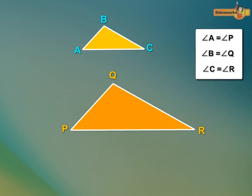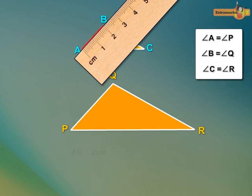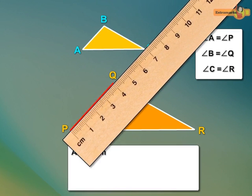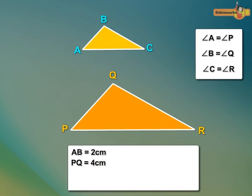Now, let us measure the sides of the triangles. AB is equal to 2 centimeters, and PQ is equal to 4 centimeters. Therefore, AB upon PQ is equal to 1 upon 2.